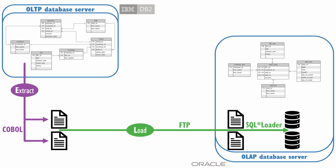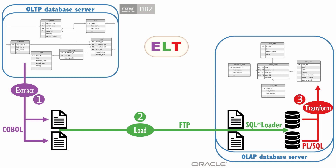Now that the data was stored in the database, it could be transformed into a star schema's tables via SQL statements — in this case, using Oracle's PL/SQL, which includes procedural language elements such as conditions and loops. When we look at the order of steps, we see that this traditional method was a form of ELT, where the data was extracted, loaded, and then transformed. But this was ELT before people started using the ELT acronym.